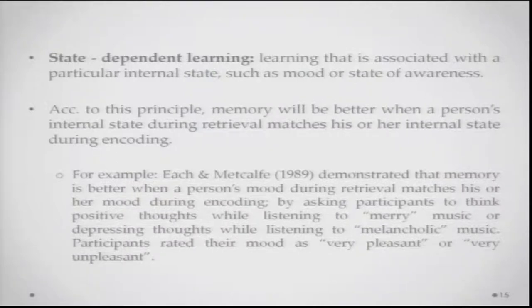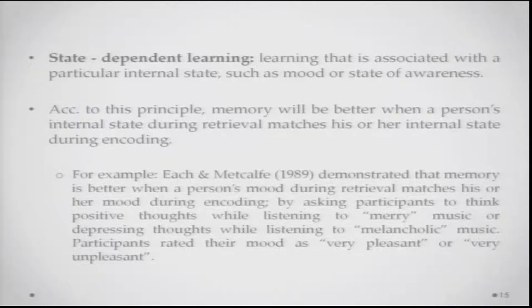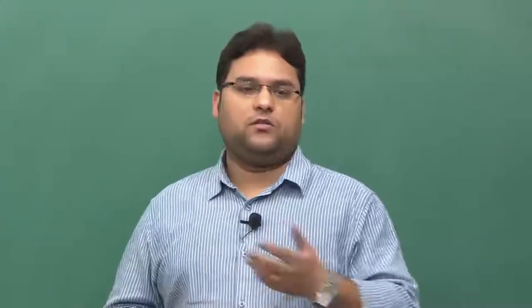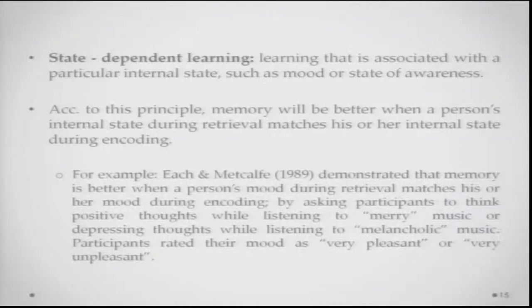Another example similar to encoding specificity is state-dependent learning. State-dependent learning is about information learned in a particular internal state — such as a mood or a state of awareness, whether excited, happy, angry, awake, drowsy, or under the influence of drugs — being more readily available when you are in that same state again. According to this principle, memory will be better when a person's internal state during encoding matches their internal state during retrieval. Eich and Metcalfe demonstrated that a person's memory is better when their mood during retrieval matches their mood during encoding.